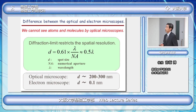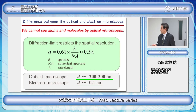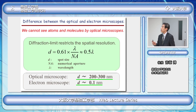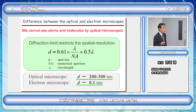But when we use electrons in the electron microscope, the wavelength of the electron is dependent on the velocity of the electron, but typically sub-nanometer in size. Because the size of atoms and molecules are in the range of nanometers or sub-nanometers, the electron microscope can detect molecules or atoms directly. But the optical microscope cannot see molecules and atoms directly.